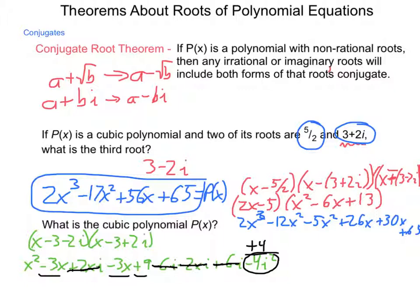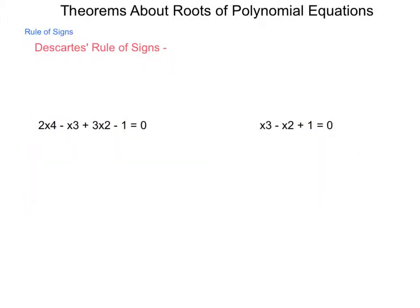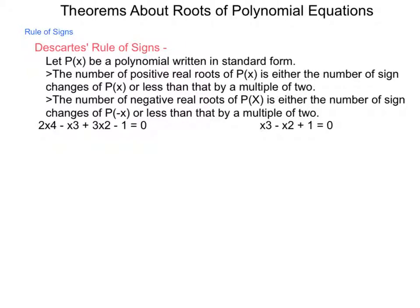We have just one more, and it talks about the positives and negatives. So, Descartes' rule of signs states the following. If we let P(x) be a polynomial written in standard form, the number of positive real roots of P(x) is either the number of sign changes of P(x) or less than that by a multiple of 2, and the number of negative real roots of P(x) is either the number of sign changes of P(-x) or less than that by a multiple of 2. Now, these sound like they're saying the same thing, but let's work through a problem.